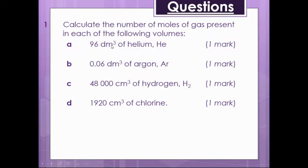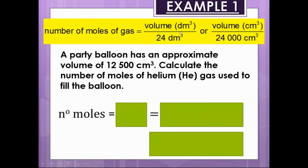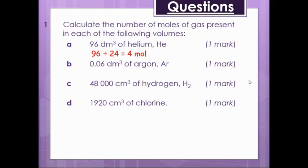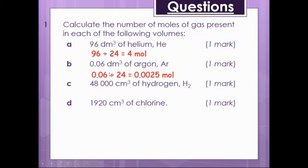Let's have a look through these questions then. So we've got 96 decimeter cubed of helium. Let's work out the number of moles. So because we're dealing with decimeter cubed, we divide the first one by 24. 96 divided by 24 equals 4. Give it a great big tick. We can green pen. You can blue pen if you want. If you're feeling nostalgic for the green pen and the blue pen, feel free.